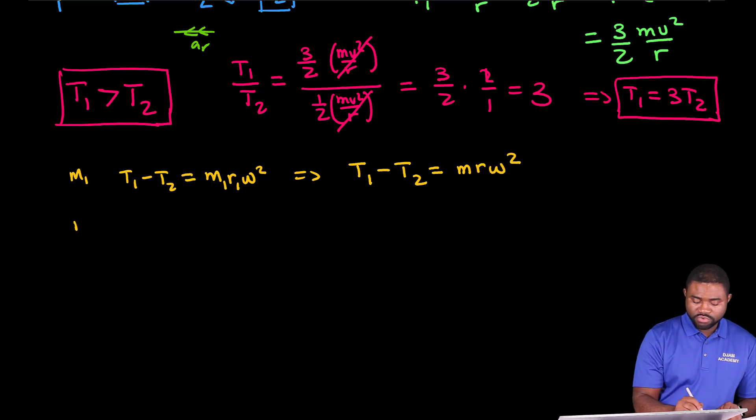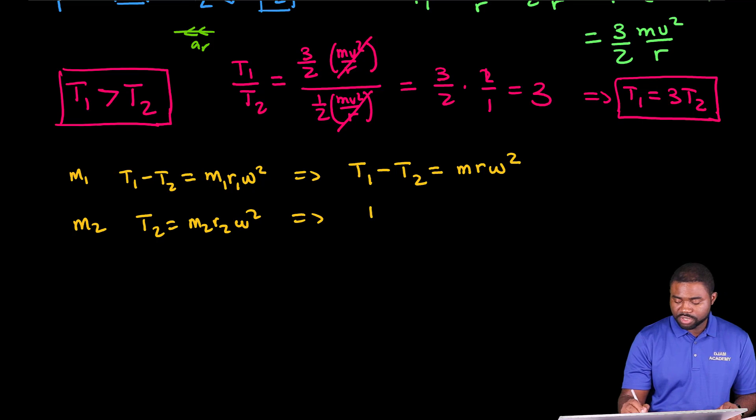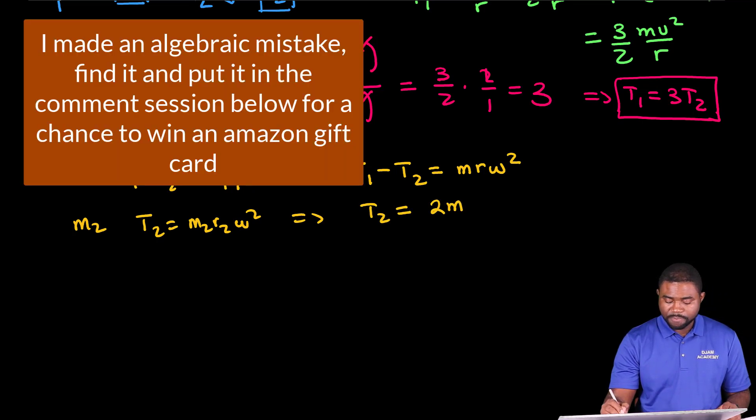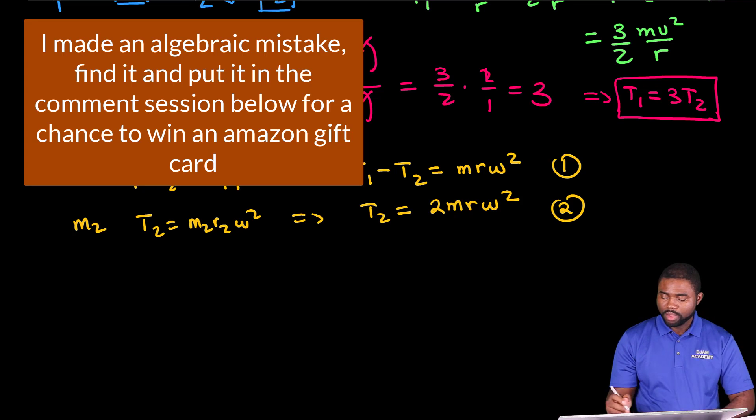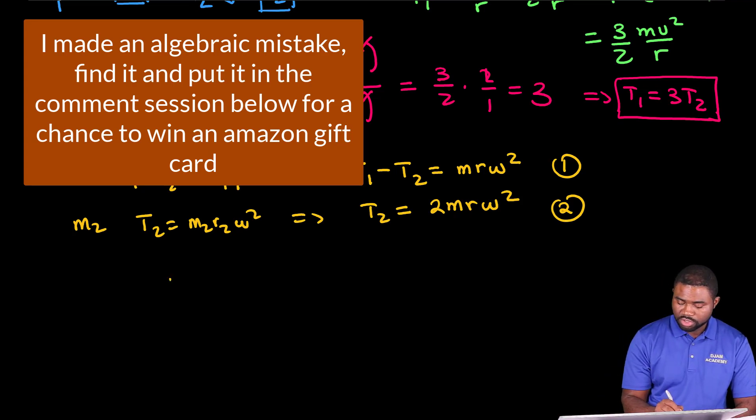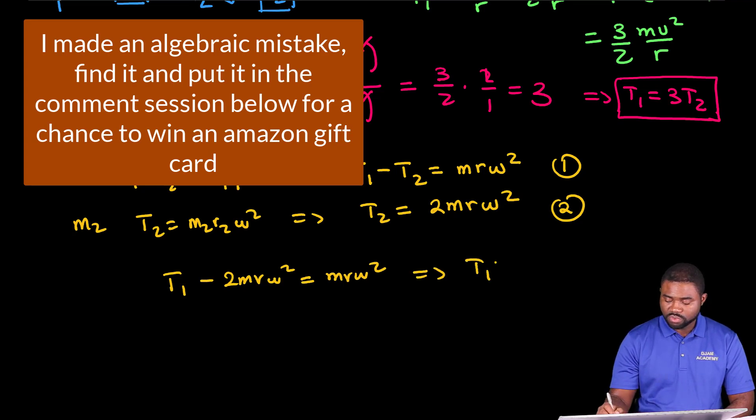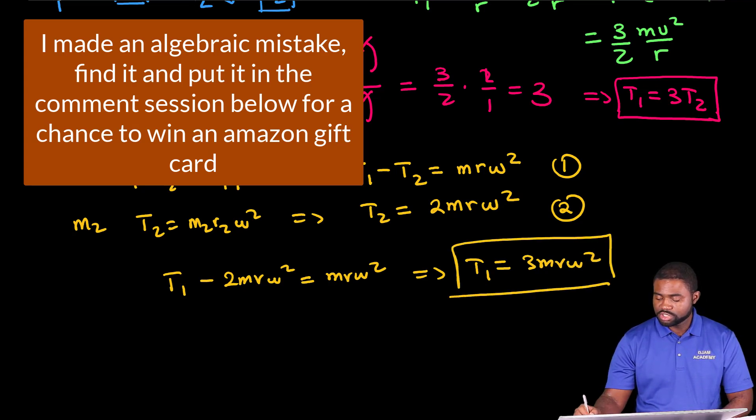is the fact that for M1 you have T1 minus T2 equal to M1 R1 omega squared. So for block 2, you have T2 equal to M2 R2 omega squared, which implies that T2 is equal to 2MR omega squared. This is equation 1 and this is equation 2. Hence, if we fit equation 2 in 1, you will have T1 minus 2MR omega squared equal to MR omega squared, which implies that T1 is equal to 3MR omega squared.